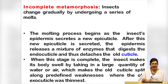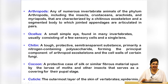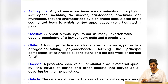Some other characteristic features found in insects: they are arthropods belonging to the phylum Arthropoda; they have ocelli, which are small simple eyes; chitin is a characteristic feature forming the exoskeleton; the cocoon is a stage of metamorphosis; and the cuticle is also present.